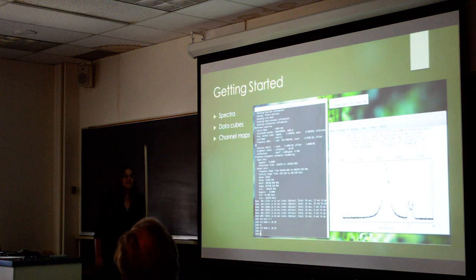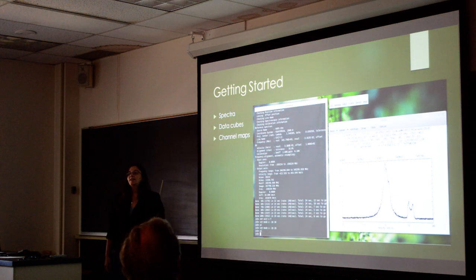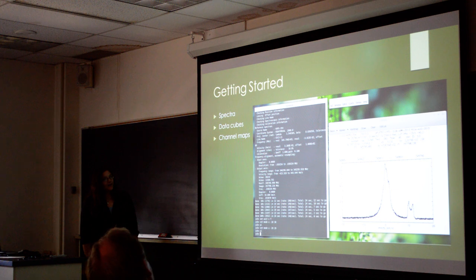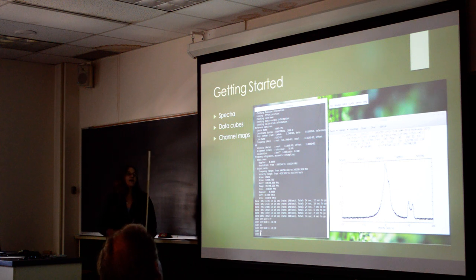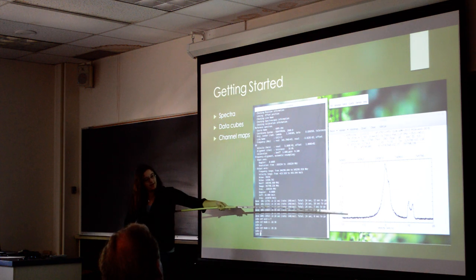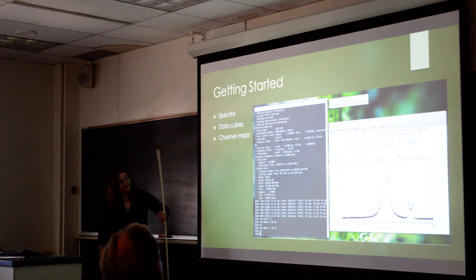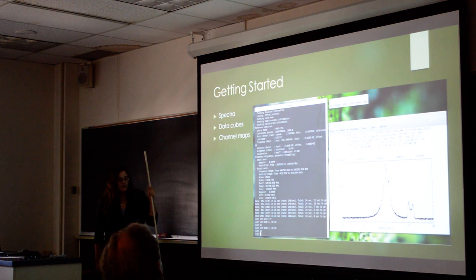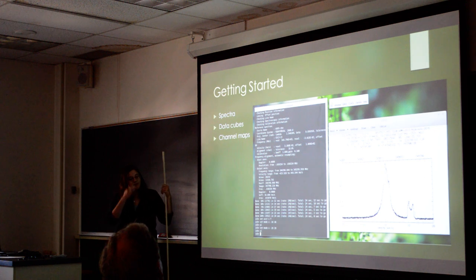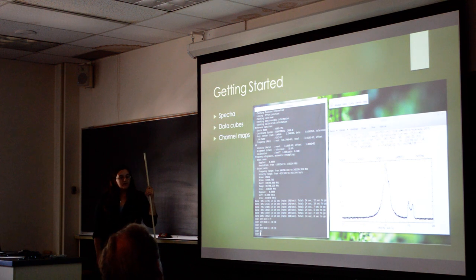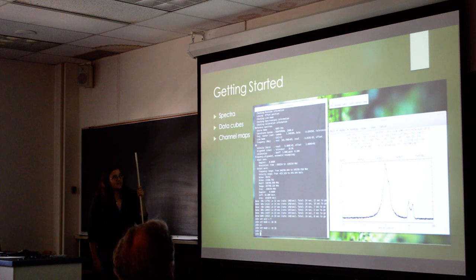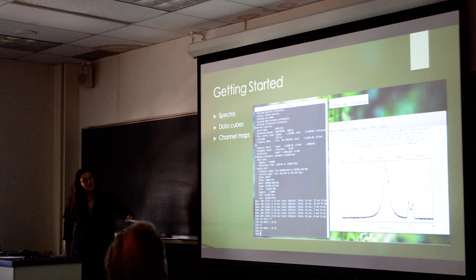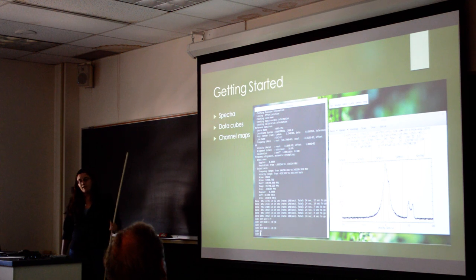So getting started, this is what I was looking at pretty much every single day. This is a nice, beautiful program called CLASS, which was a pain to learn, but once you did, it was very helpful. You would start off using spectra like here, and that's actually the average spectra that was taken. All of these average spectra you could put together into a data cube. And once you did that, you could look at all these different channels and all the spectra at different times. And through that, you were able to create the channel maps.